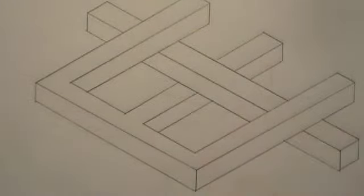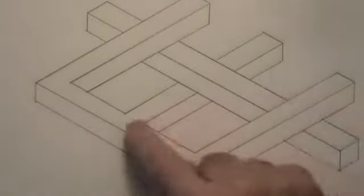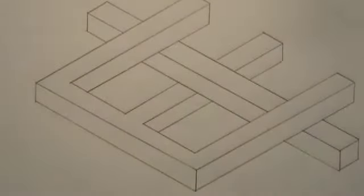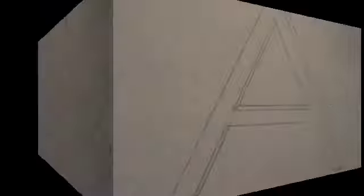But if they're all straight coming off this bar, these three should be at the same level. Therefore, it's impossible. And the impossible was produced only by where your lines stopped and started in this drawing.